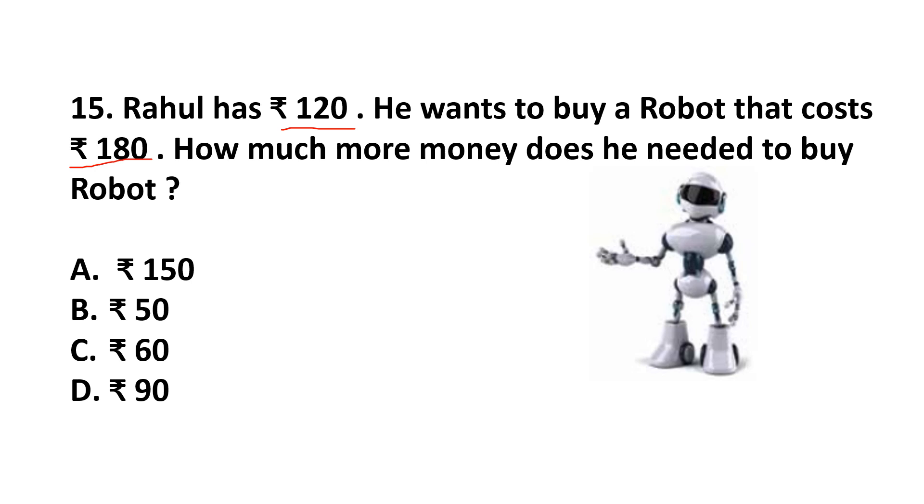So, he needs 180 minus 120. That means, 0 minus 0 is 0. 8 minus 2 is 6. And 1 minus 1 is 0. So, he needs 60 rupees more. Answer is option C.